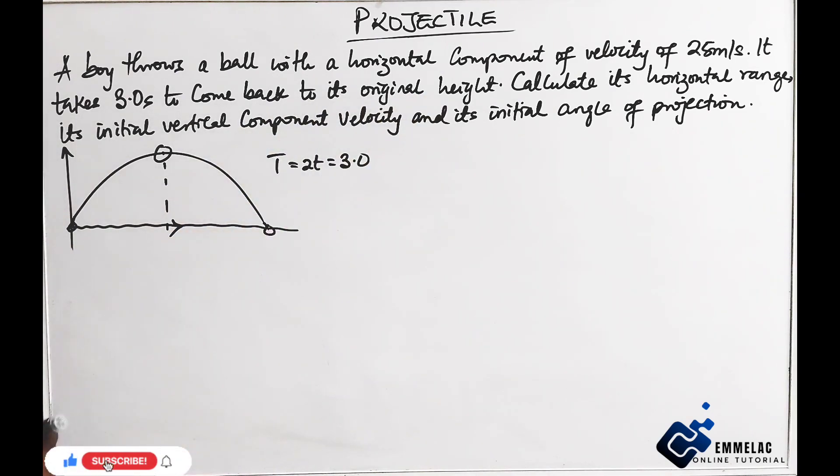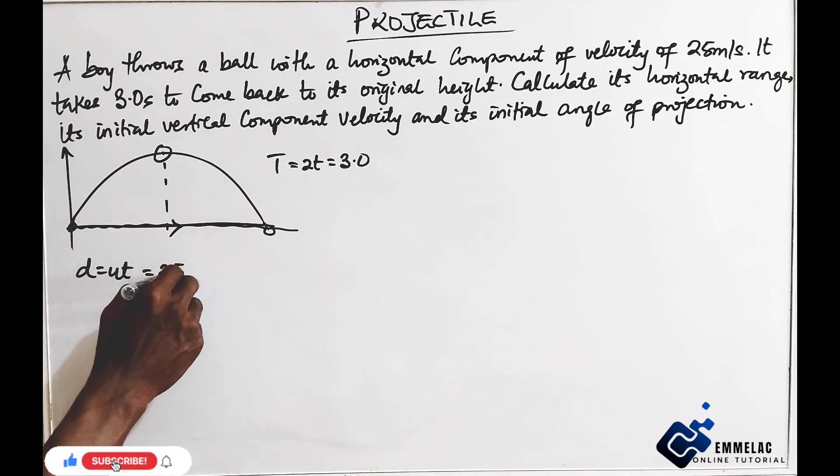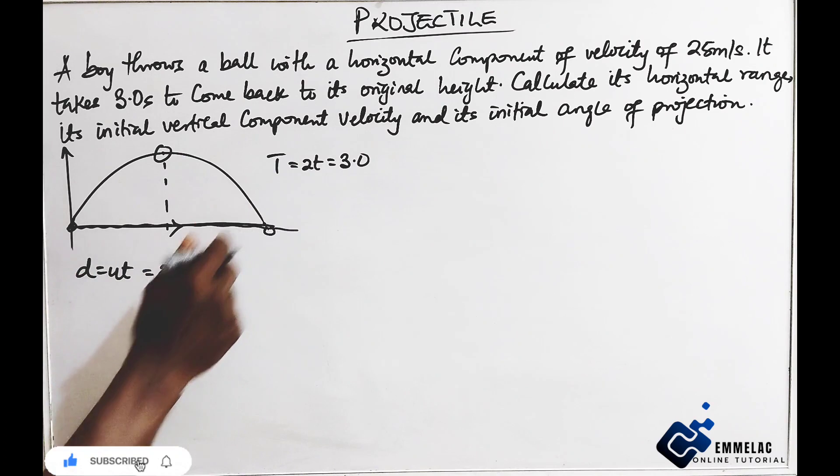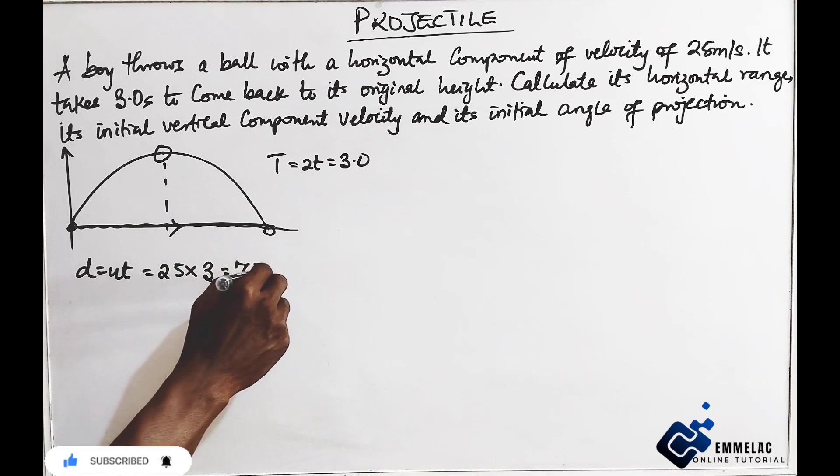Now calculate its range, the horizontal distance. So D equals UT. From here our U, which is the initial velocity, is 25 times the time which is 3, and this should give us 75 meters.